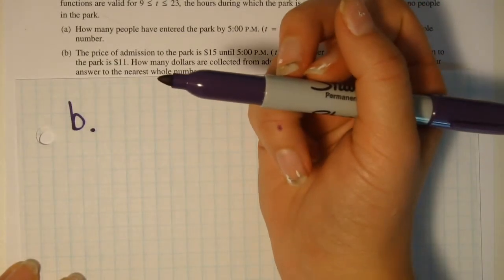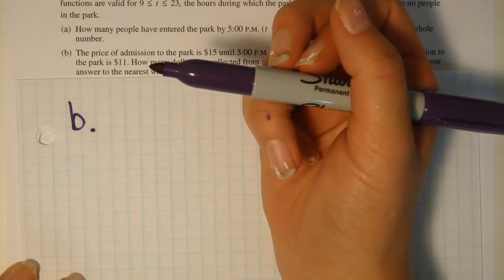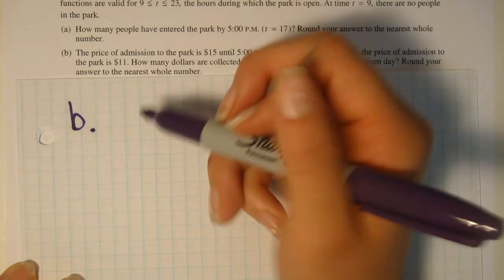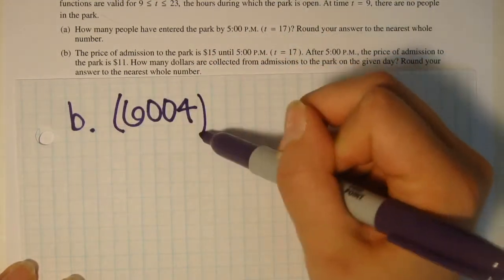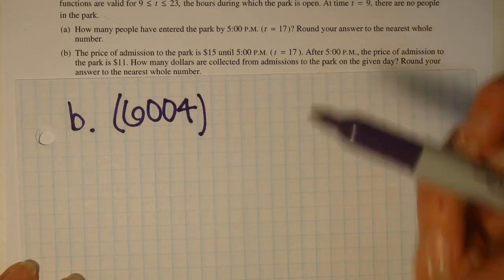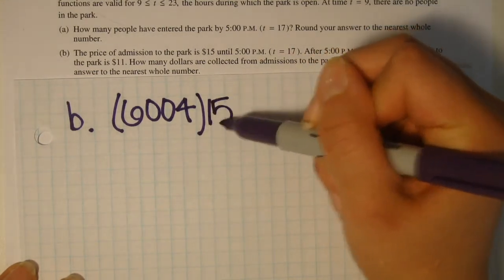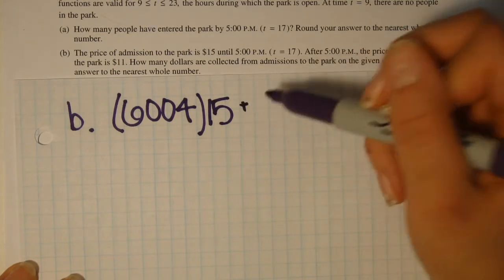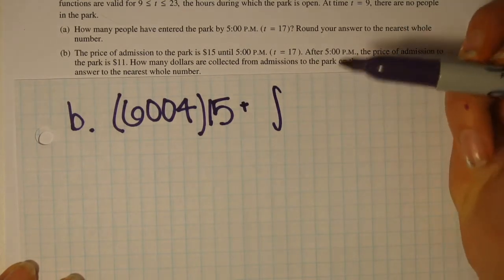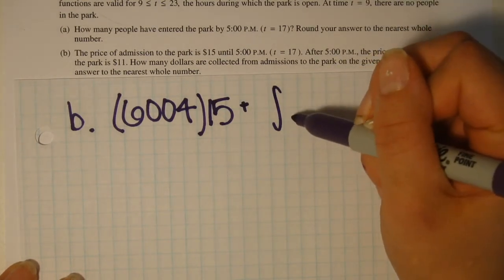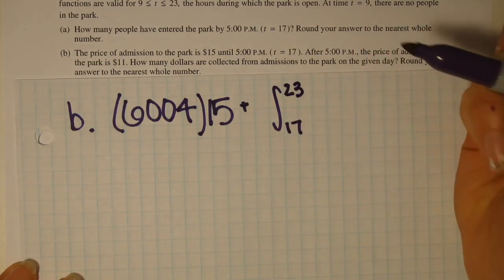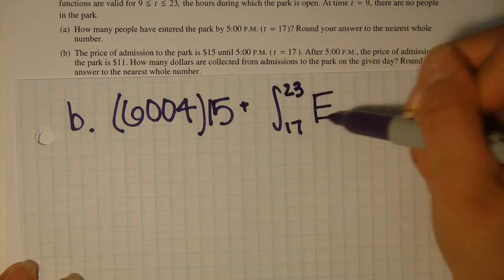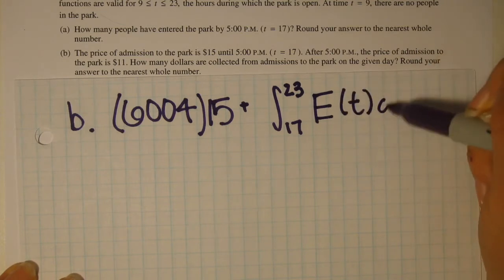In part A we got that 6,004 people enter the park by 5 o'clock. And if you enter by 5 o'clock it costs $15. So you want to multiply this by 15 and add the remaining of the integral. So we left off at 17, so we are going to start at 17 and end at 23, which is when the park ends. And we do the same integral, E(t) dt. And you could set this up, you could just change the limits in your calculator and press enter again.